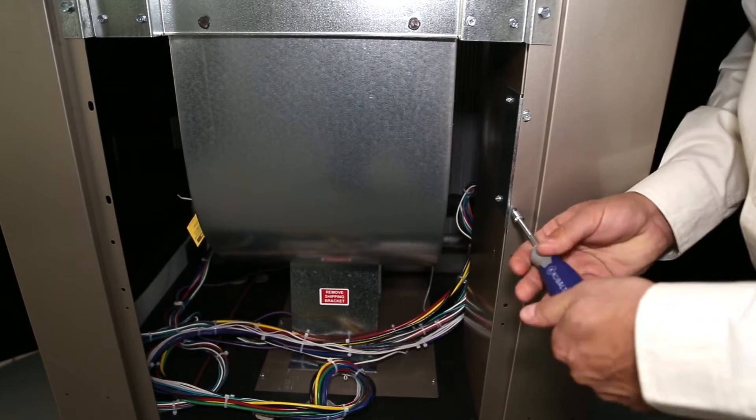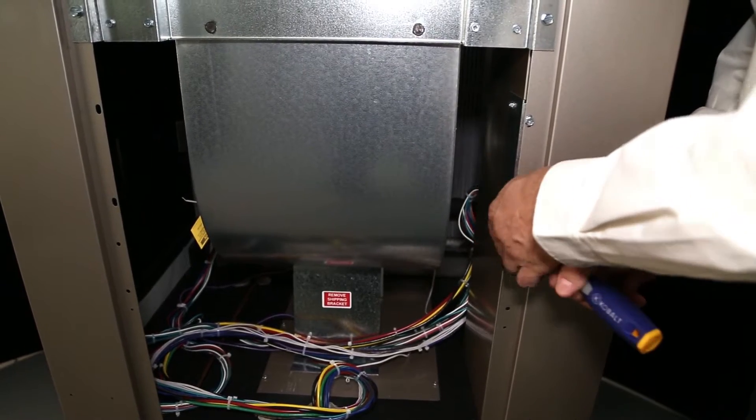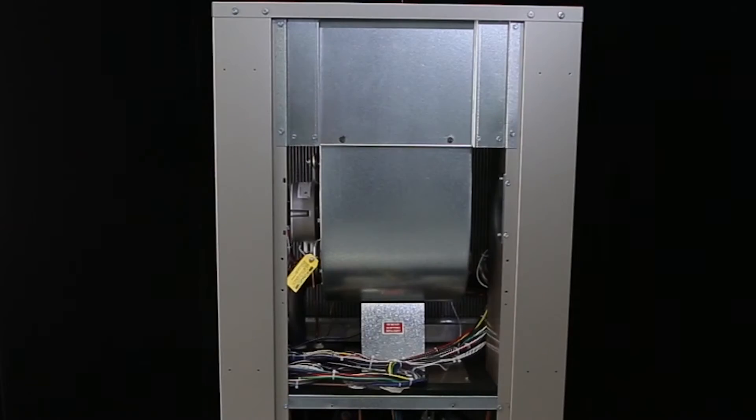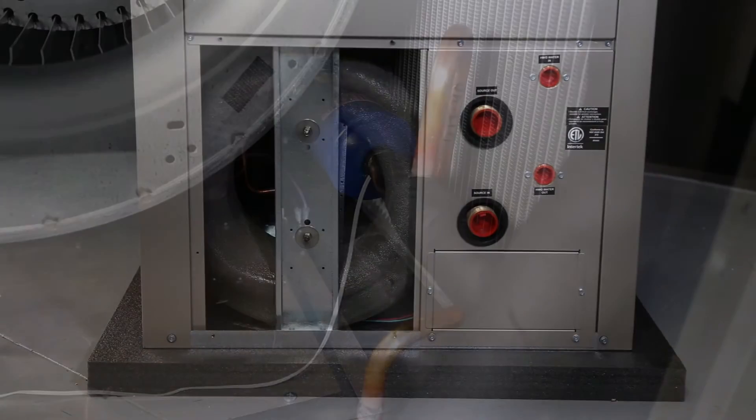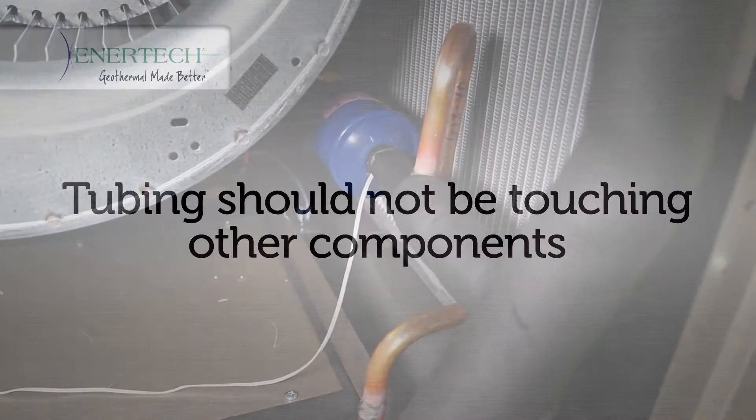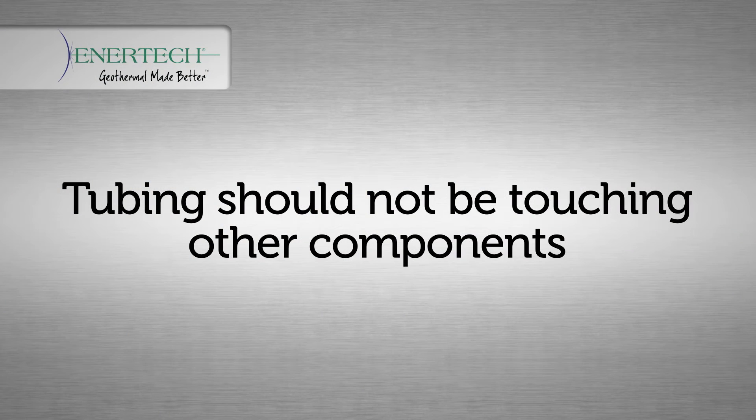Units are shipped with the control box in the unit air handler in the upper section of the unit. You'll need access on all four sides of the unit before installation. Verify that all refrigerant tubing is free of dents and kinks. Refrigerant tubing should not be touching other unit components.